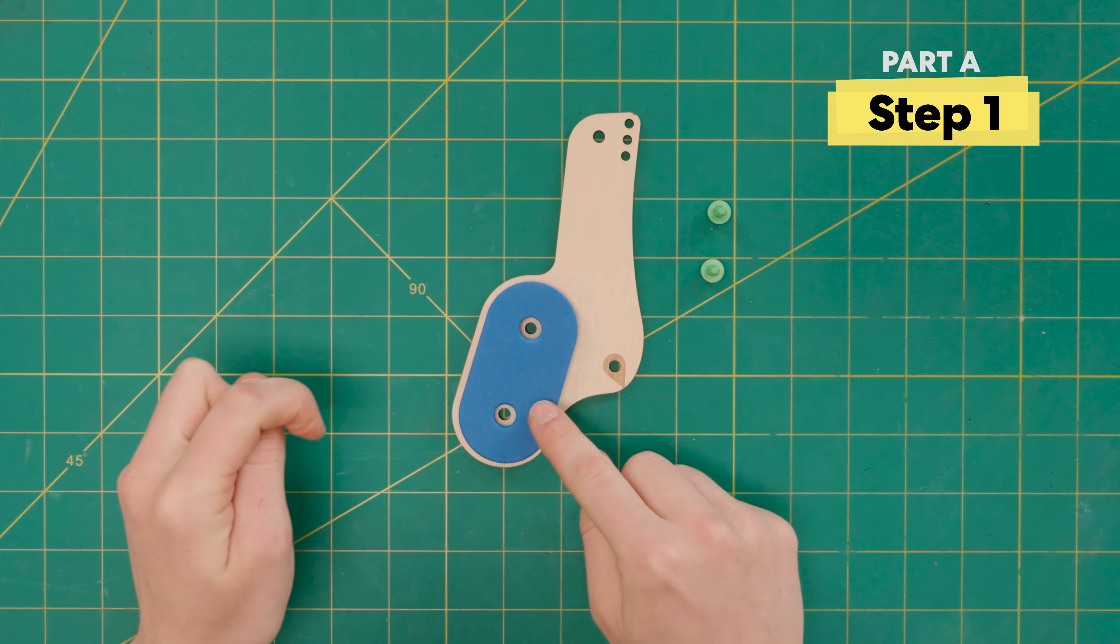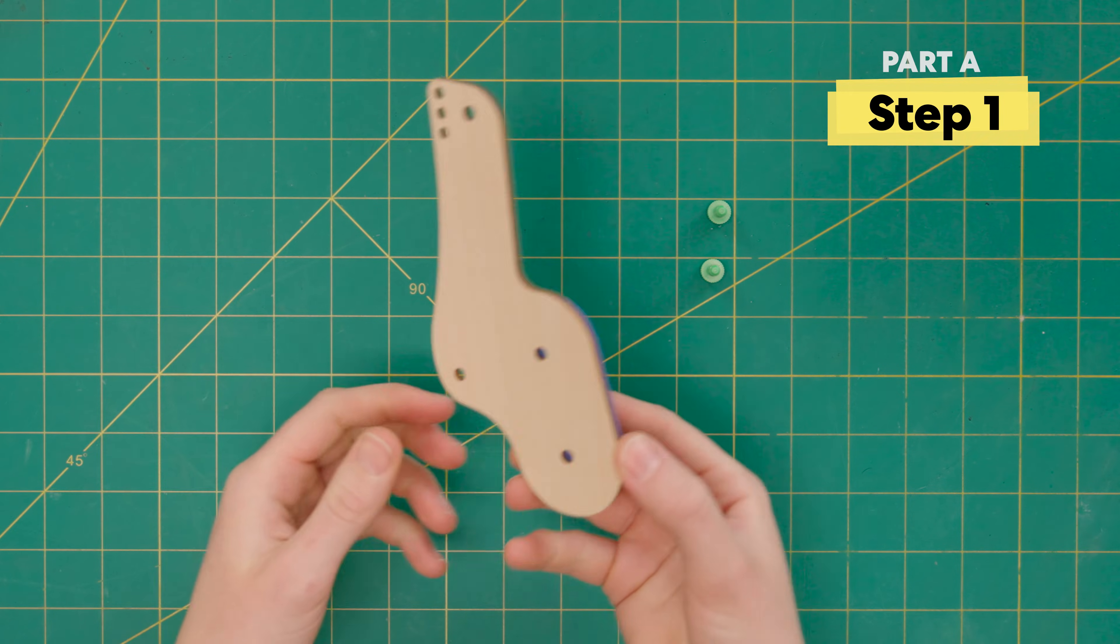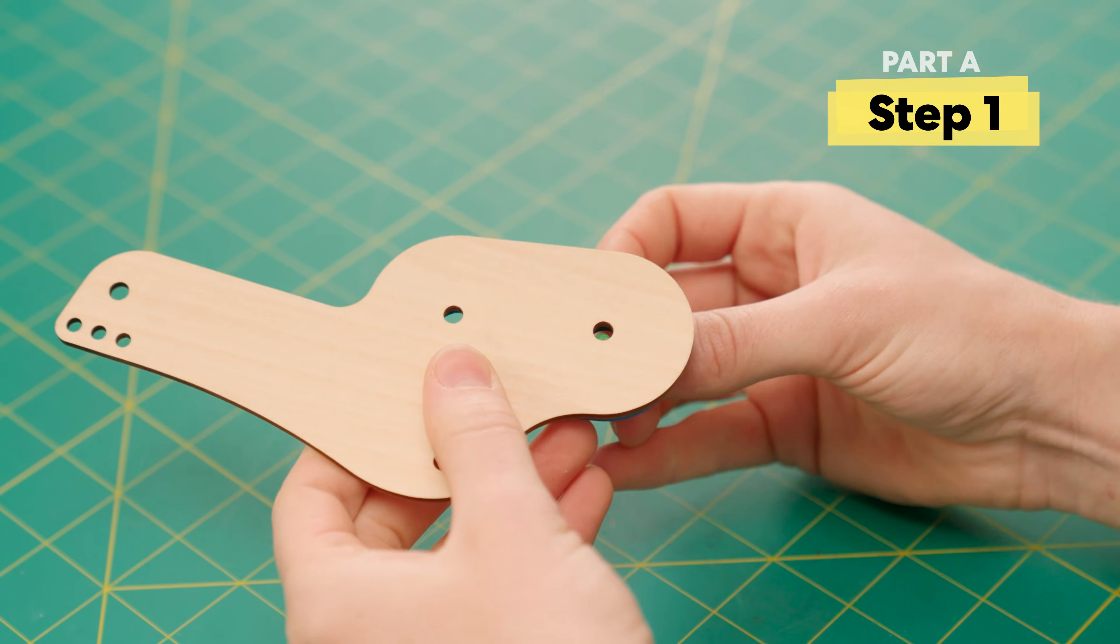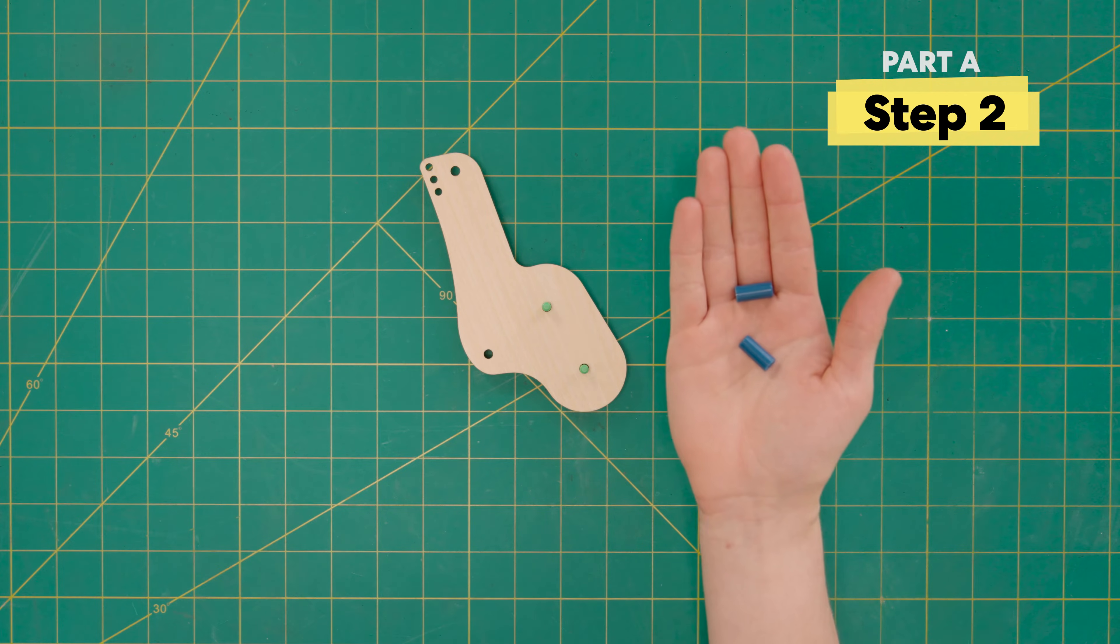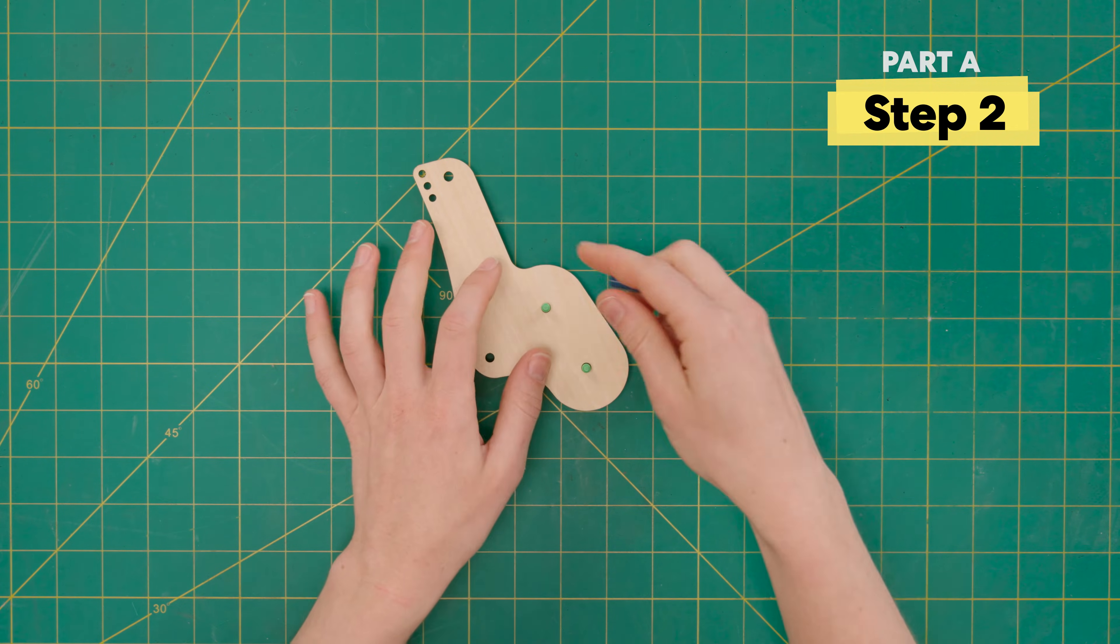First, grab the handle piece with the blue foam, then flip it over. Use two green bolts and insert them up through the bottom. Then attach two blue spacers to the tops of those bolts.